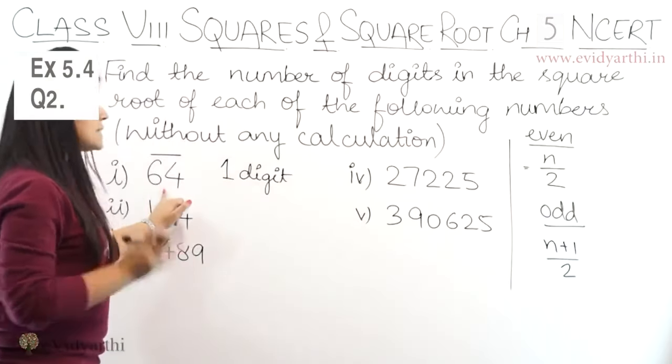Now 4th part mein. Let's put the bars. 1, 2, 3. Now this one is 3 digit. Right. Ab iska agar mein formula se karu. So 1, 2, 3, 4, 5. 5 digit. Means 5 plus 1 upon 2. Which is 6 upon 2. Which is 6 upon 2. That is 3. Right.